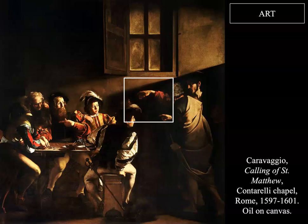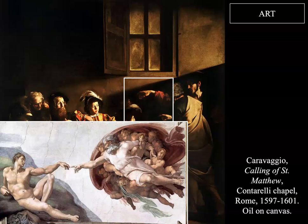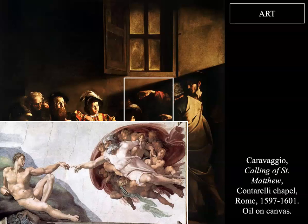He does that through the hand where Christ is pointing to Matthew in a very laissez-faire way. If you recognize it, he is reflecting on Michelangelo's Sistine Chapel ceiling, where you have God reaching out to Adam in that famous moment. So he's showing the Christ figure with his hand out like this, reflecting that gesture.